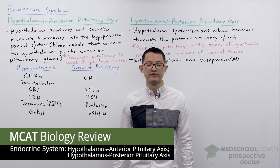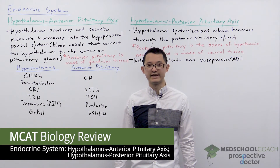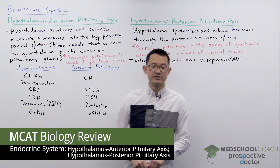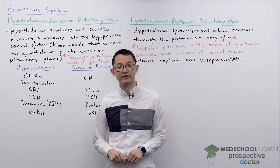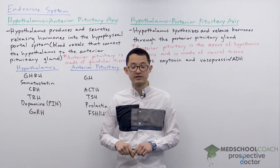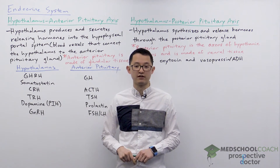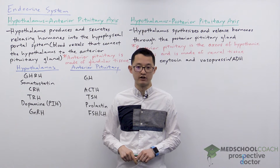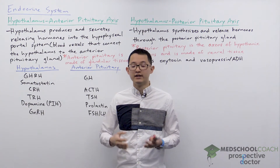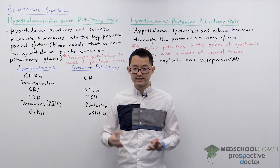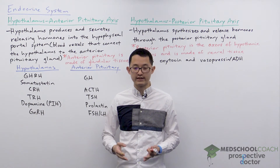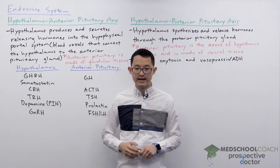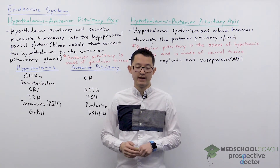In this video we're going to go over the hypothalamus and the pituitary gland. These two structures are very important in the endocrine system because they both secrete a lot of hormones that regulate physiology. There are two separate pathways in these two structures and you can see how it works in this diagram.